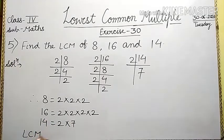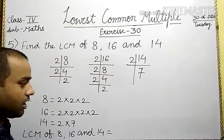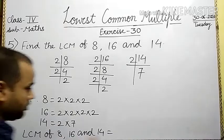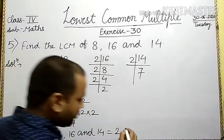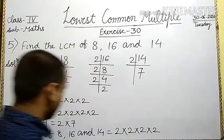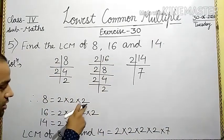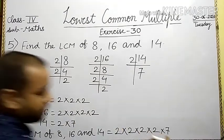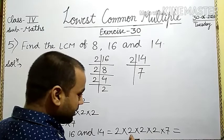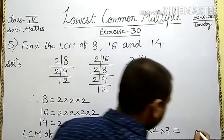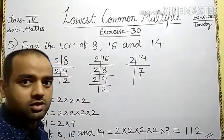The LCM of 8, 16 and 14. Here, collect all prime factors. 2 occurs 3 times in 8, 4 times in 16 — maximum is 4 times — write 2 four times. Is it clear? Next prime number 7: 7 does not occur in 8 or 16, but occurs 1 time in 14 — write 1 time. And lastly, we find the product: 7 times 2 gives 14, times 2 is 28, times 2 is 56, times 2 is 112. This is your required answer. Is it clear?